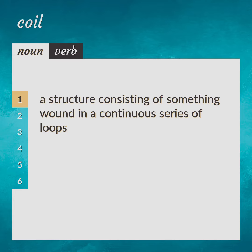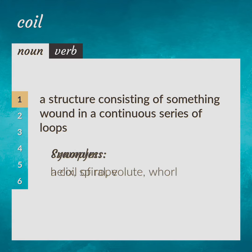A structure consisting of something wound in a continuous series of loops. A coil of rope. Synonyms: helix, spiral, volute, whorl.